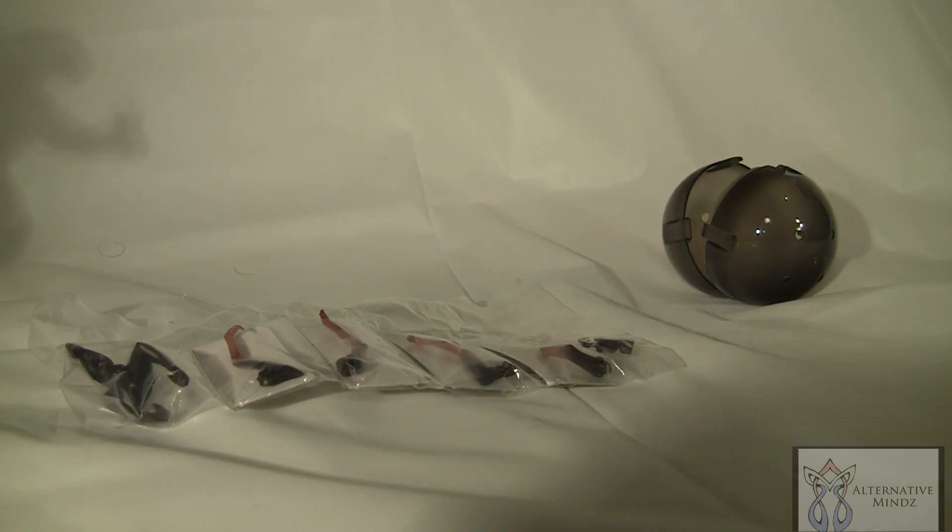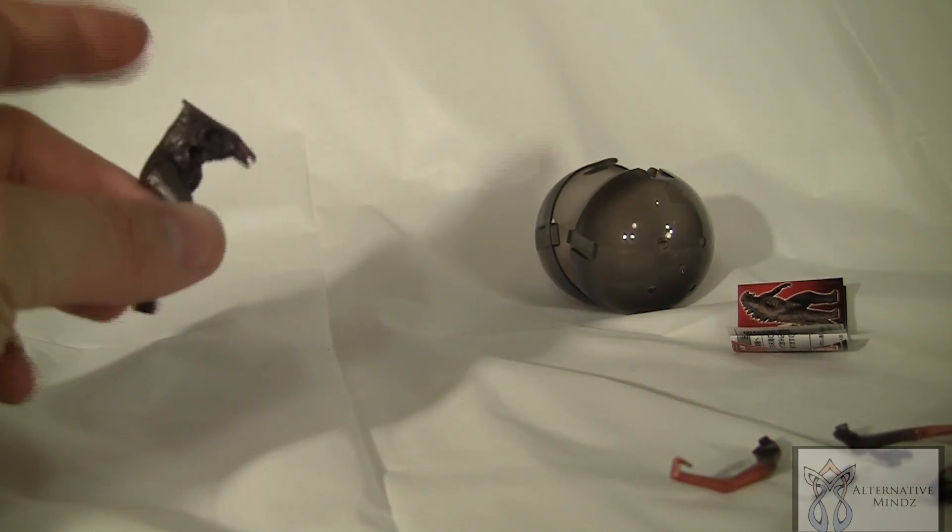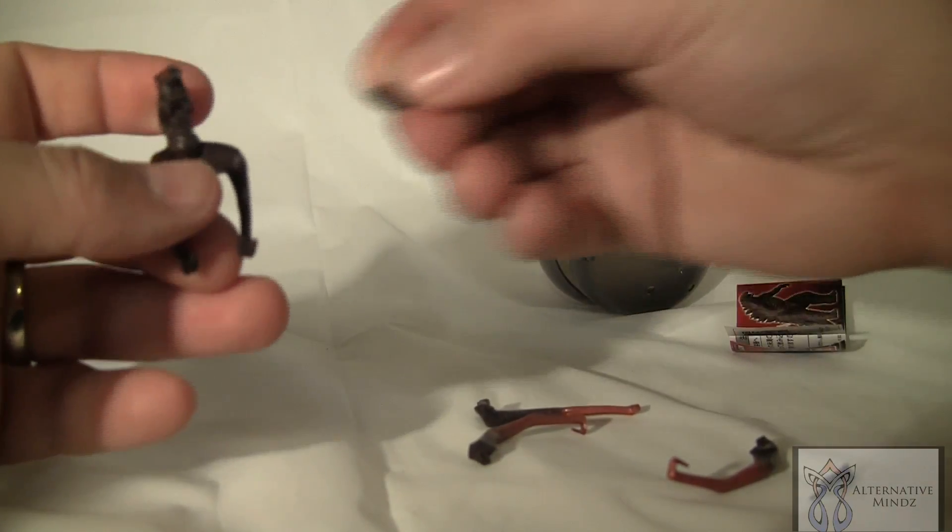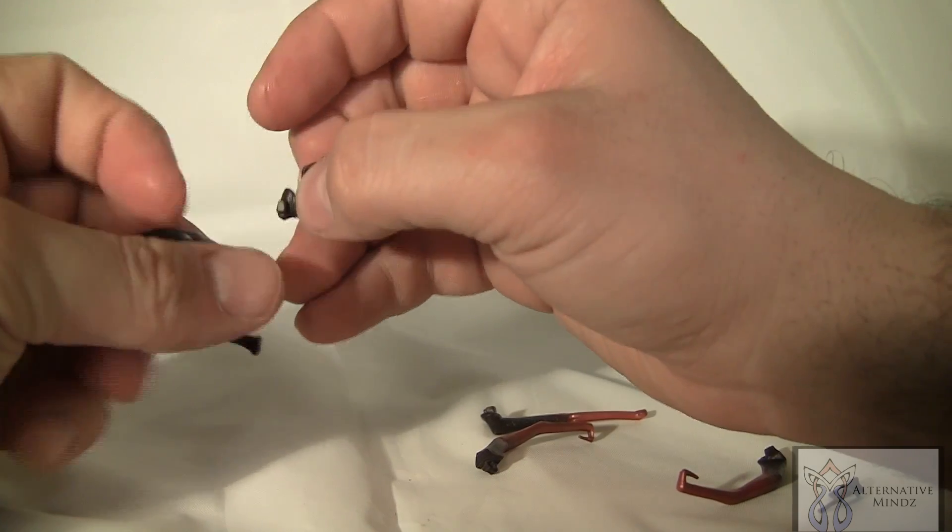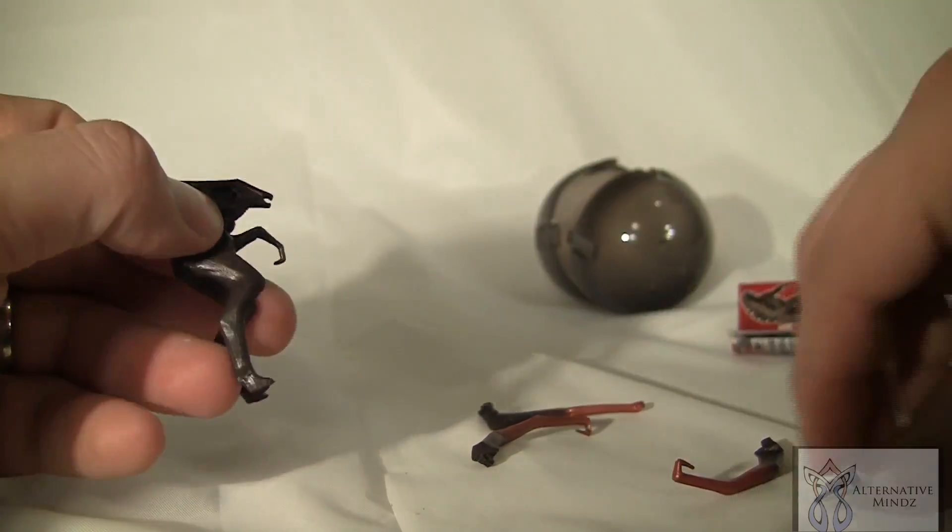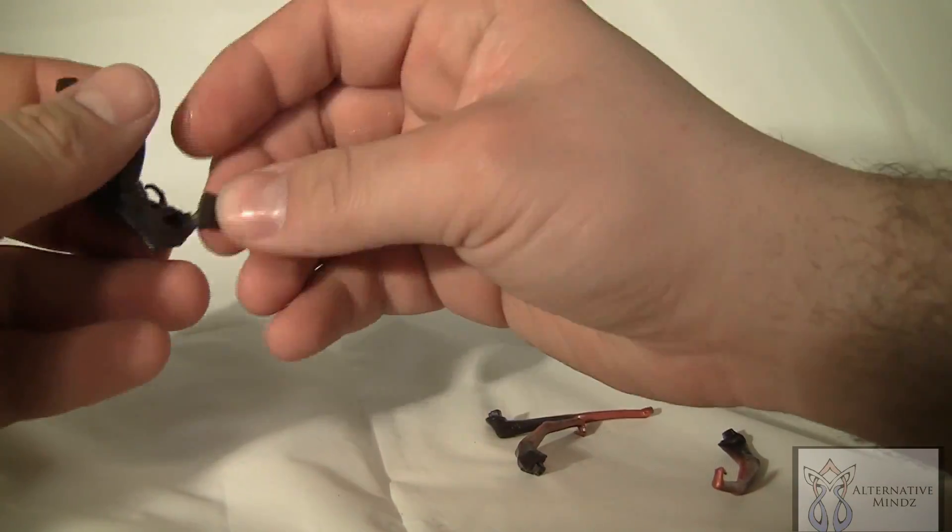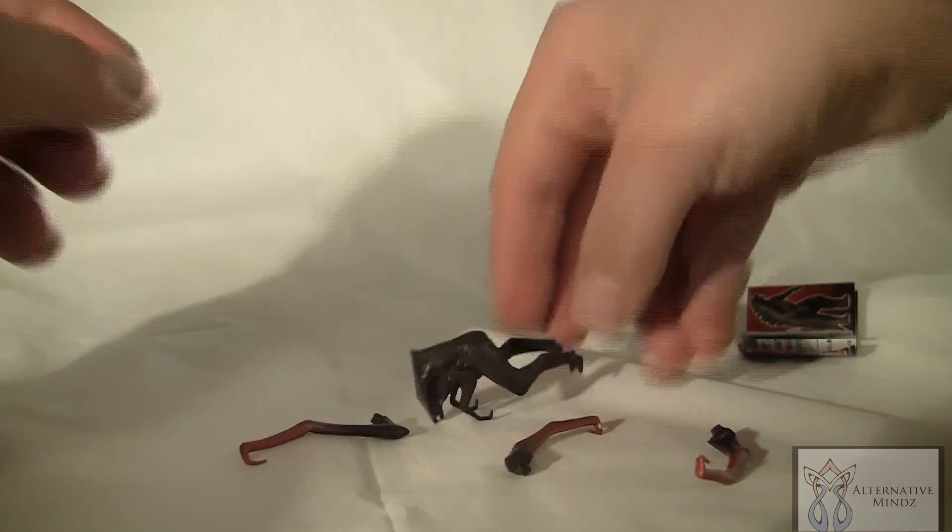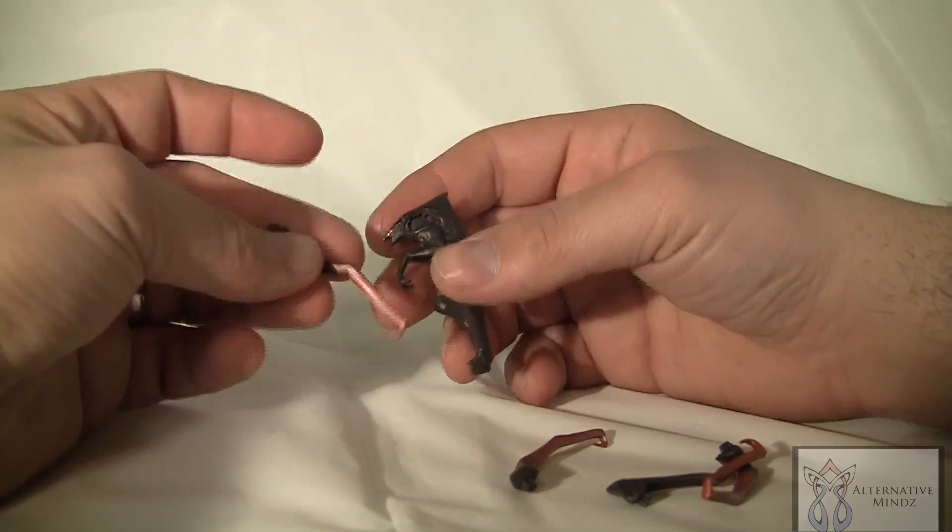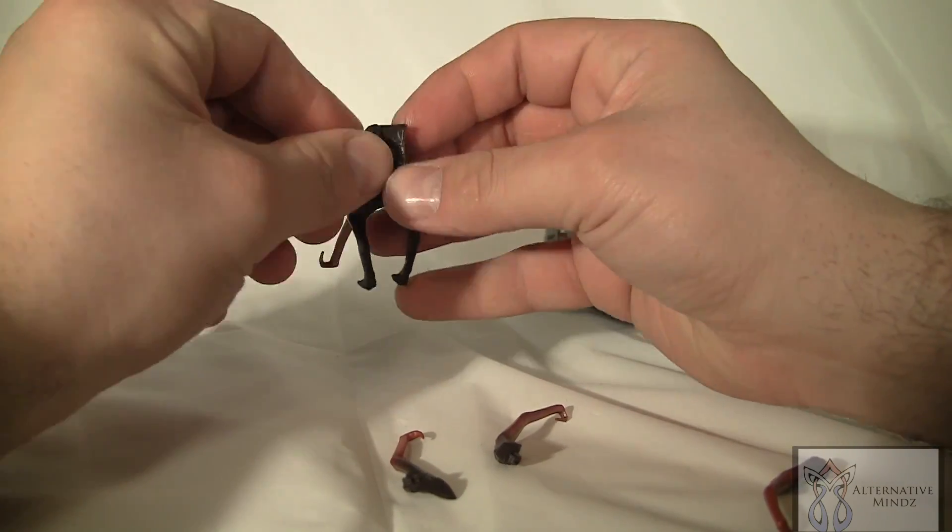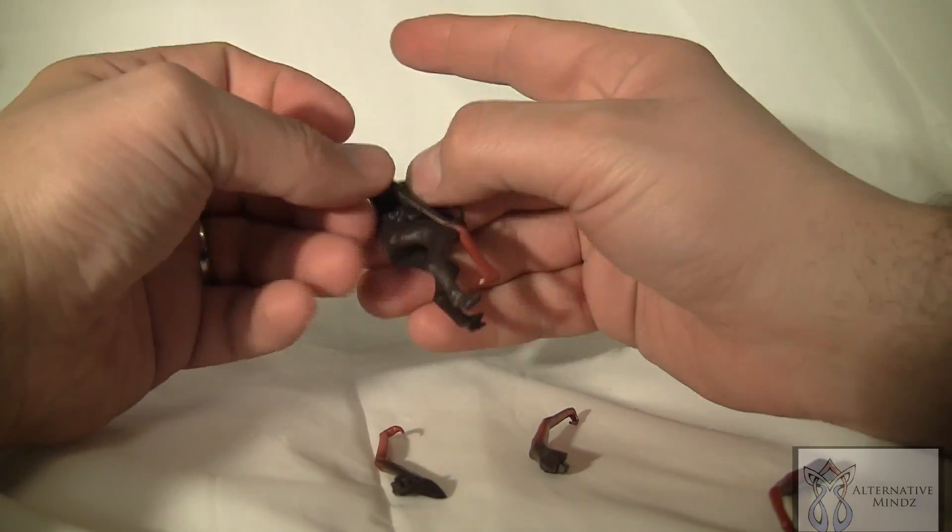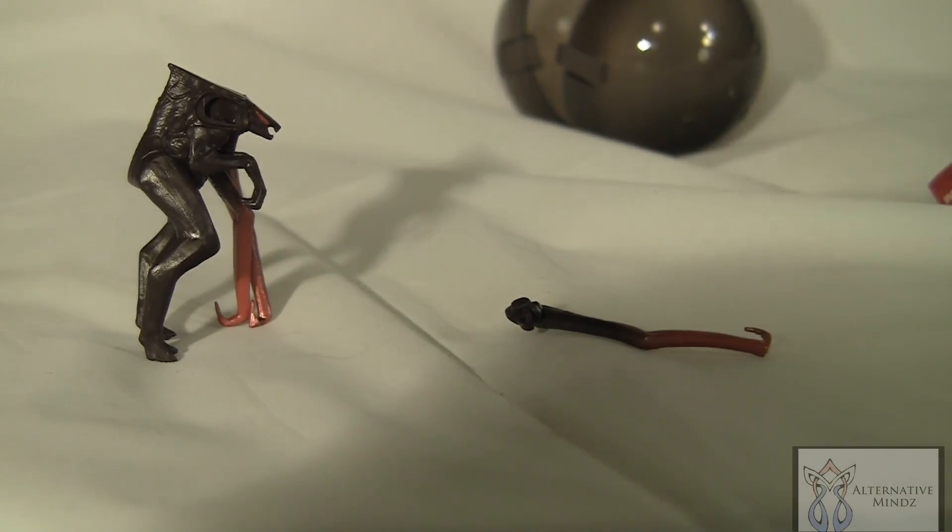Alright, so this is the figure right here and we're going to put them together. Let's get the Mutu ready. You're going to see it has these forearms and these little ones. So I'm going to put the little ones first. Let's see, assuming it goes like this.